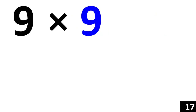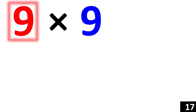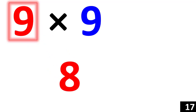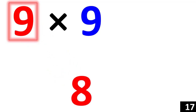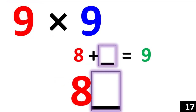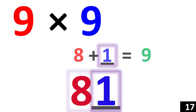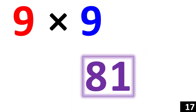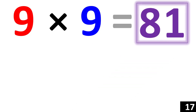9 times 9. Starting from the number 9, 1 less than 9 is 8. So, 8 is your first number. Then we say, 8 plus what number would give us 9? 1. Therefore, 81 is your answer.